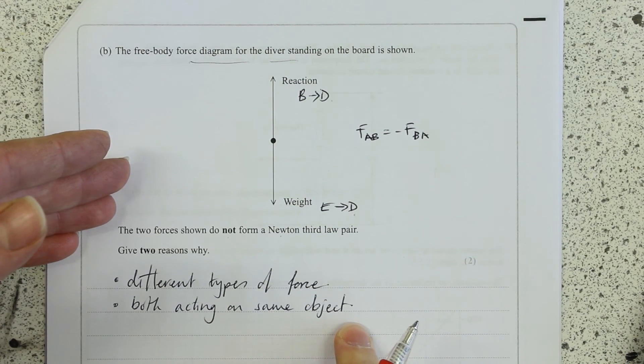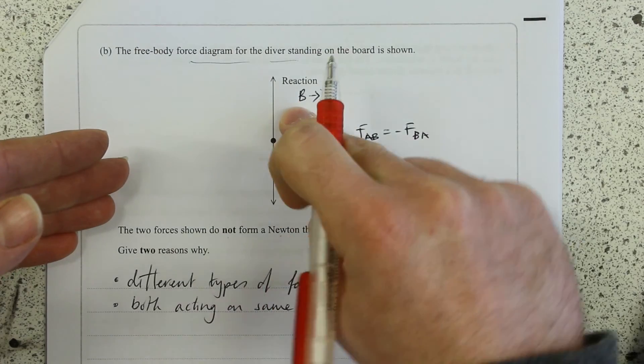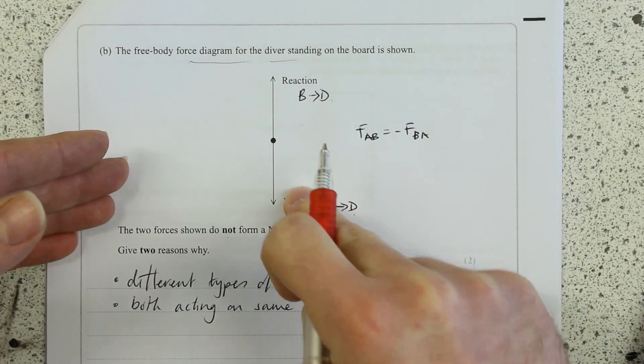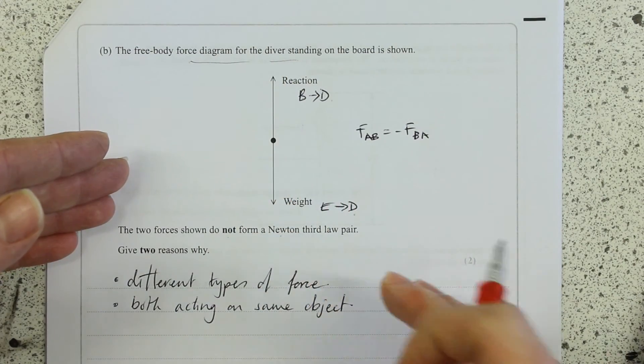I would also accept an explanation that the reaction is caused by the board and the weight is caused by the earth. So it's not A, B, B, A.